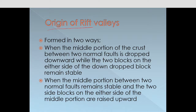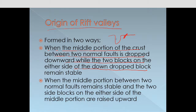Regarding the origin of Rift Valley, it can be formed in two ways. One is when the middle portion of the crust between two normal faults is dropped downward, and the two blocks on either side of the down-dropped block remain stable. This downward subsidence forms this kind of Rift Valley.